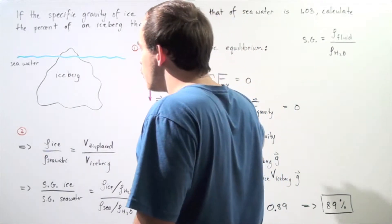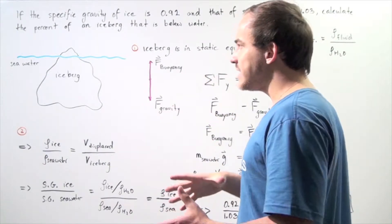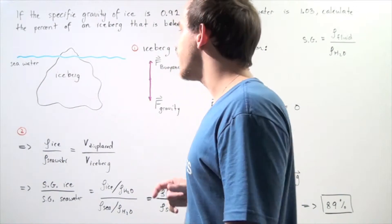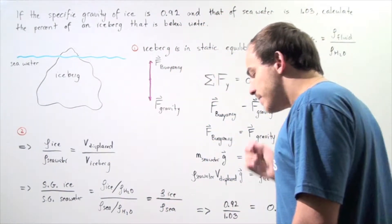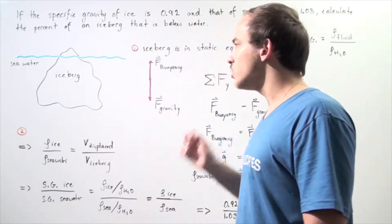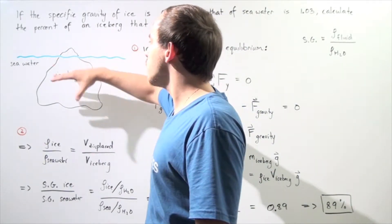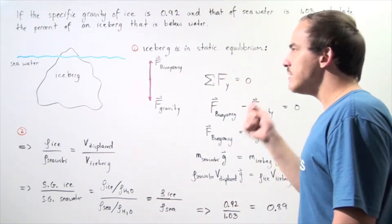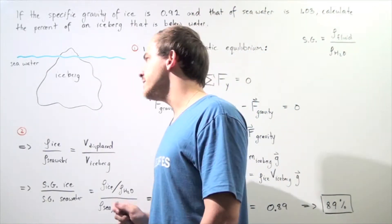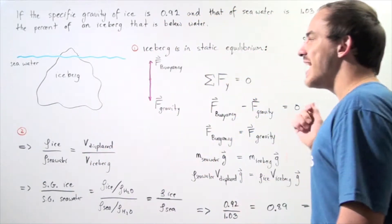Let's assume that the iceberg has a larger percentage of it below seawater than above seawater, so our diagram looks something like this. We begin by assuming that our iceberg — the object — is in static equilibrium. In other words, it's floating and a portion of the iceberg is floating above the seawater. If the iceberg is in static equilibrium, the sum of all the forces acting on the iceberg along the y-axis is zero.